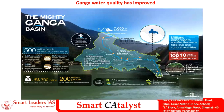The Ganga basin comprises 11 states and 17 major tributaries including the Yamuna, Koshi, and Chambal. It is home to nearly 500 million people, 140 fish species, and two biosphere reserves: Nanda Devi and Sundarbans National Park. Five endangered species including the Gangetic Dolphin and Royal Bengal Tiger also survive in this basin.